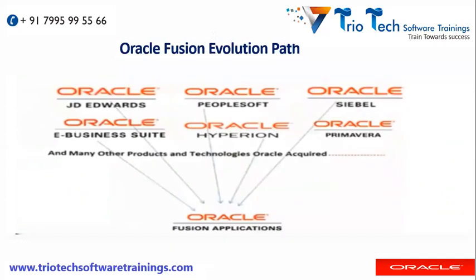Before discussing the difference between on-premise and cloud, I want to explain that all these products — JD Edwards, EBS, PeopleSoft, Siebel — are on-premise models. Fusion was initially offered in both on-premise and cloud, but now Oracle Fusion Applications is only cloud-based — there is no on-premise option. So let's see what on-premise and cloud model mean.